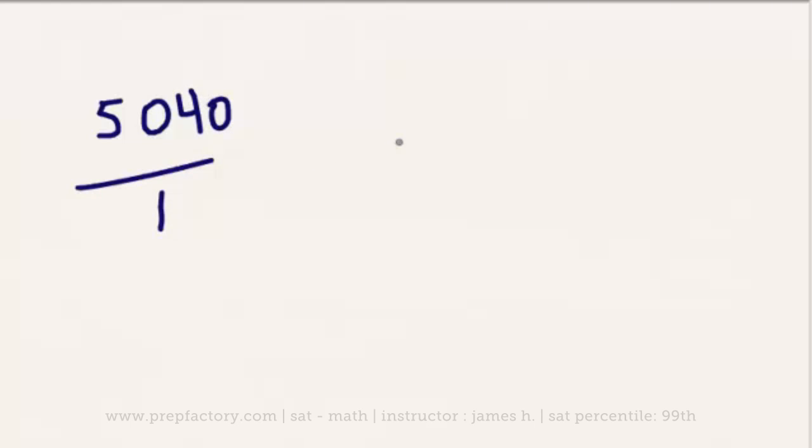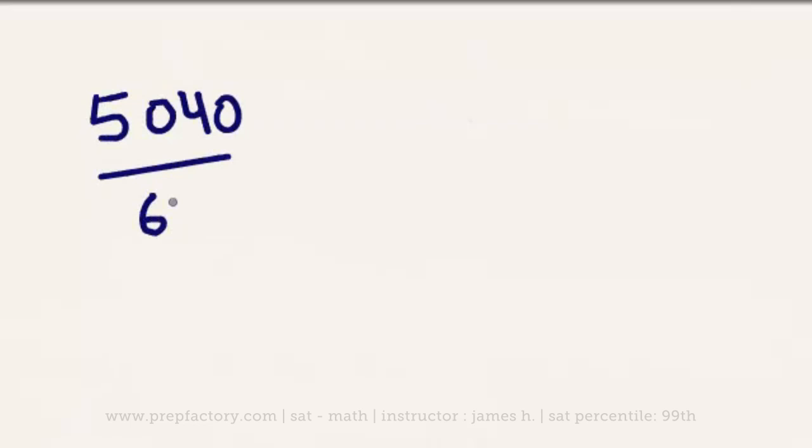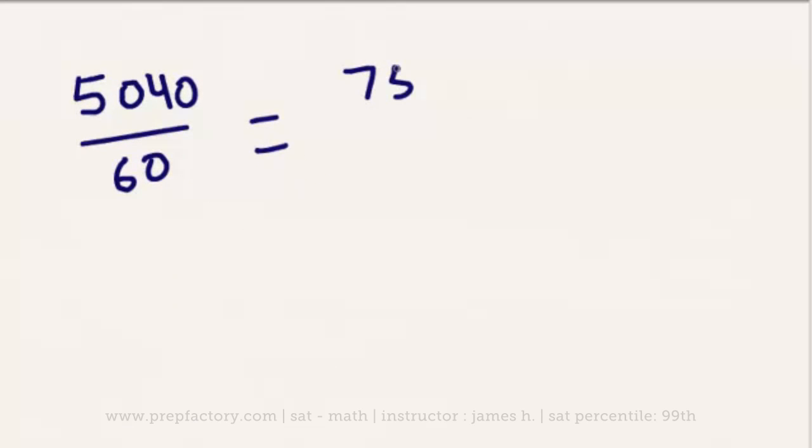But when we set up our proportion, it's going to be relative to a number of minutes. What we're ultimately looking for is a number of minutes. So rather than write it that way, we're going to want to write our proportion relative to minutes. So we know how many minutes are in an hour, of course, 60. So we can then create our proportion as 5,040 over 60 equals the number of pages that we're looking for, of course, which in this case is going to be 756, over x.